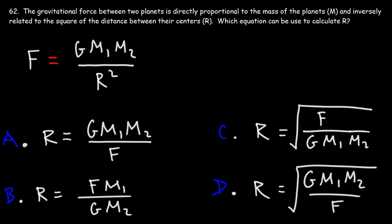The gravitational force between two planets is directly proportional to the mass of the planets and inversely related to the square of the distance between their centers. Which equation can be used to calculate R, and how can we isolate R in this equation?